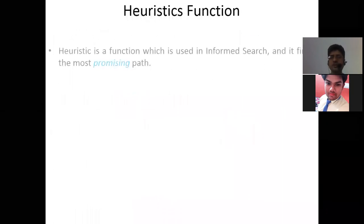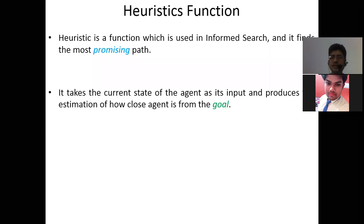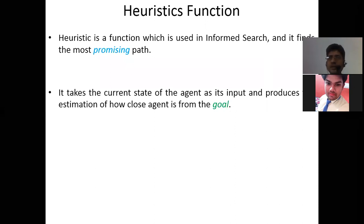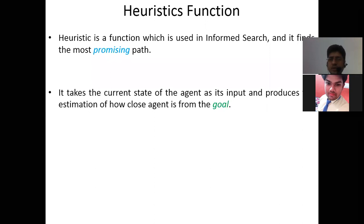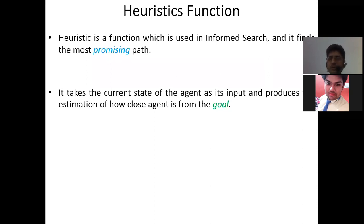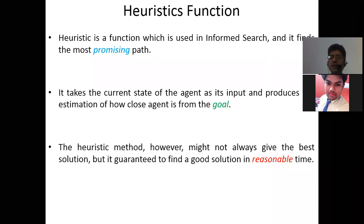We use a heuristic function in heuristic search. A heuristic function is used in informed search to find the most promising path. It takes the current state of the agent as input and produces an estimation of how close the agent is to the goal. The heuristic method might not always give the best solution, but it is guaranteed to find a good solution in a reasonable time.